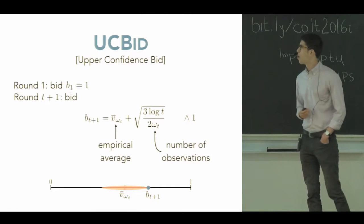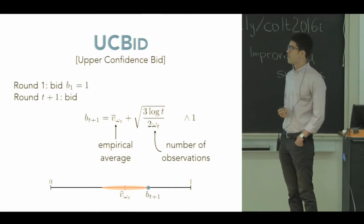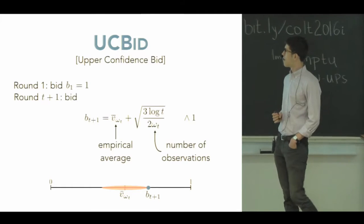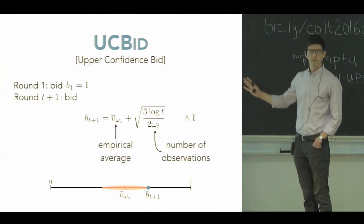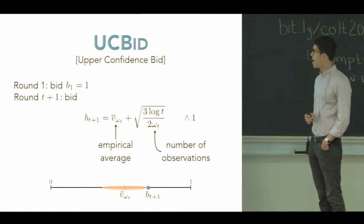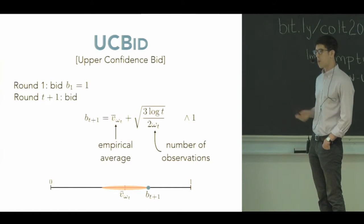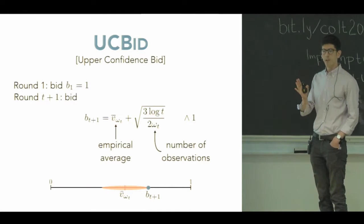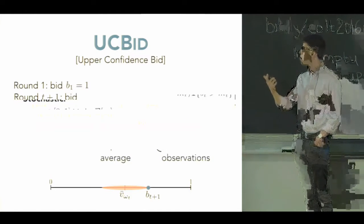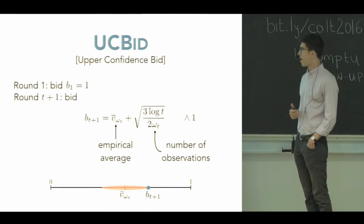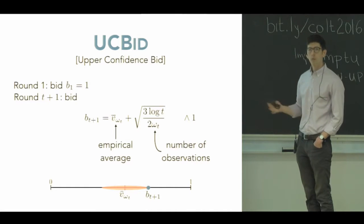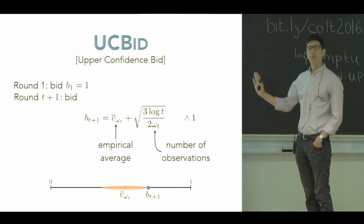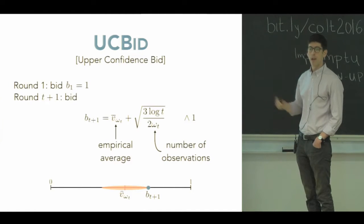So we propose an algorithm that we call UCBID, named after the celebrated UCB algorithm of Lai-Robbins and Auer et al. And here's how it works. This bidder bids 1 the first time to win the item, just to win it. And then at subsequent rounds, they build an upper confidence interval. So they take the empirical average of values seen so far and add some slack that corresponds to an upper confidence bound. And that will shrink as the number of observations increases. So as more and more bids are observed, I get closer and closer to the true expected value of the item, and I do better and better.